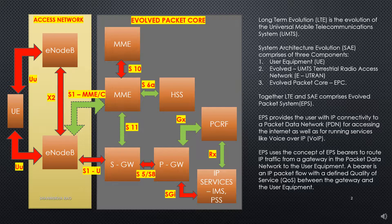LTE is the evolution of the Universal Mobile Telecommunication System. System Architecture Evolution comprises of three components: first is User Equipment, second is Evolved Terrestrial Radio Access Network, and the third is Evolved Packet Core. Together LTE and SAE comprise the Evolved Packet System. EPS provides the user with IP connectivity to a packet data network for accessing the internet as well as for running services like Voice over IP. EPS uses the concept of EPS bearers to route IP traffic from a gateway in the packet data network to the user equipment. A bearer is an IP packet flow with a defined quality of service between the gateway and the user equipment.